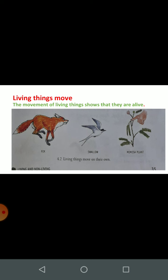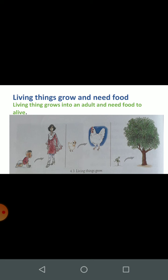Children, we can see in this picture, living things move. Yani sajiv jo hain, wo move karte hain, chalte hain. Living things grow and need food. Living things ko barne ke liye bhojan ki aawashyakta hoti hai — jivit rahne ke liye bhojan ki aawashyakta hoti hai.